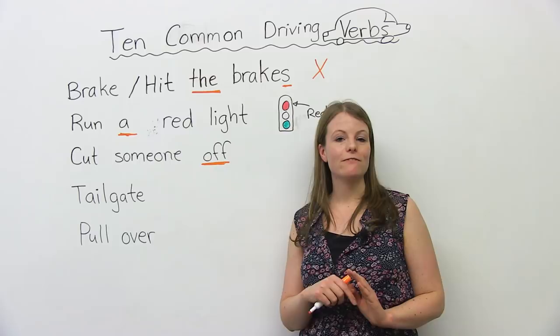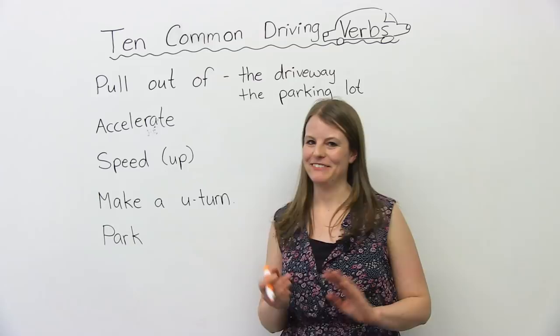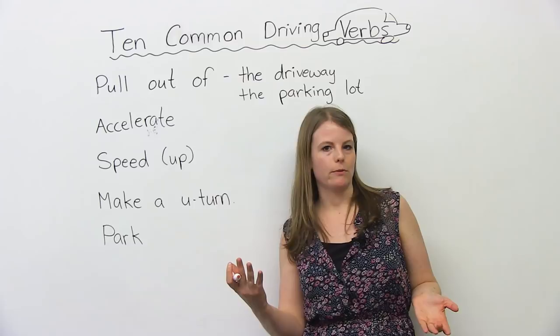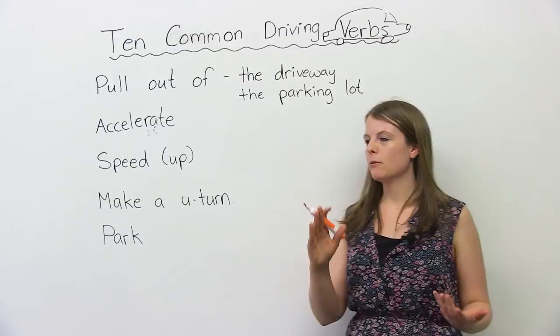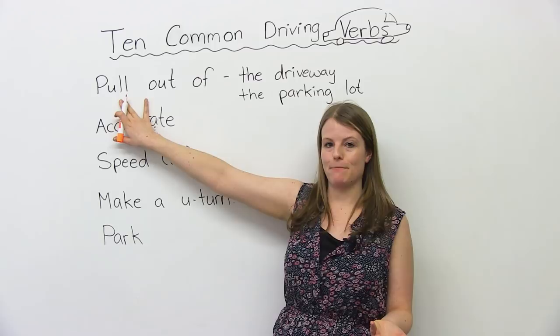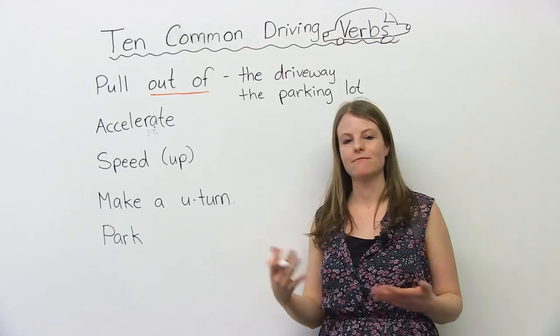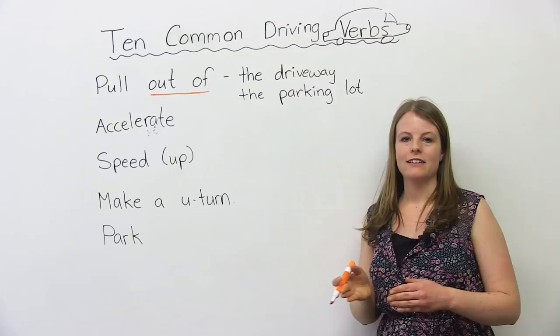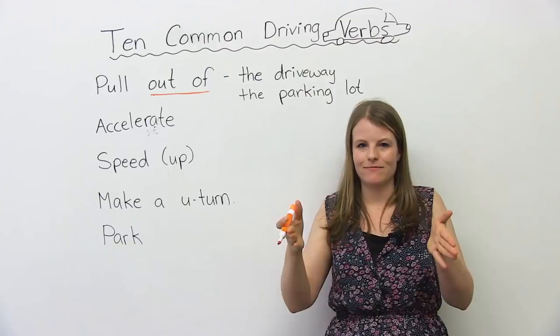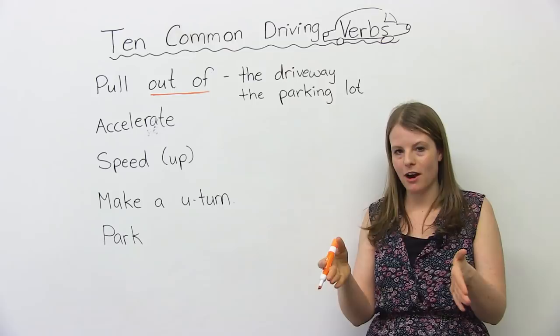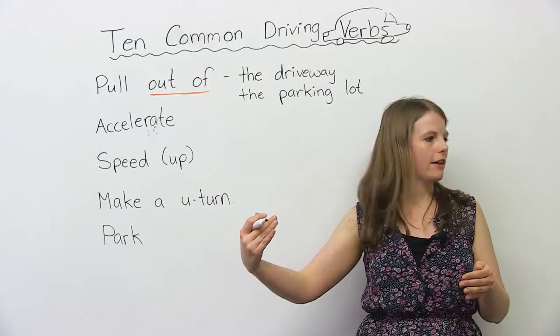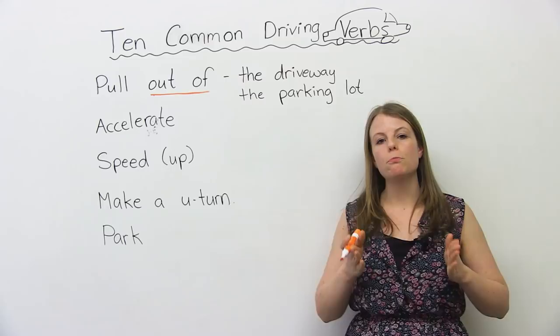Now let's look at five more driving verbs. Our next one is similar to pull over — both use the word pull, but it's a phrasal verb with a different preposition: pull out of. Pull out of means you're going backwards or forwards out of a small space, usually a parking lot or a driveway. You park your car in your driveway, look to make sure no other cars are coming, and pull out of your driveway or pull out of the parking lot.